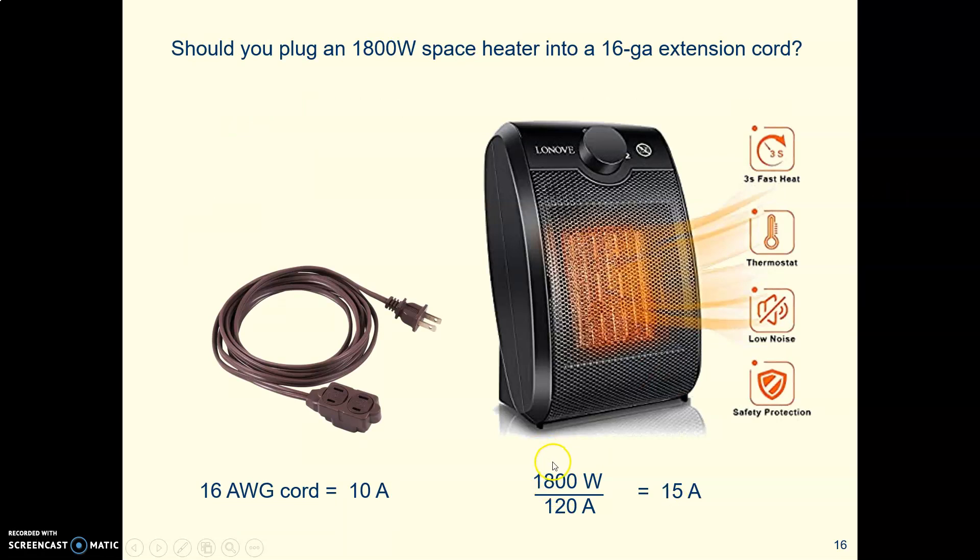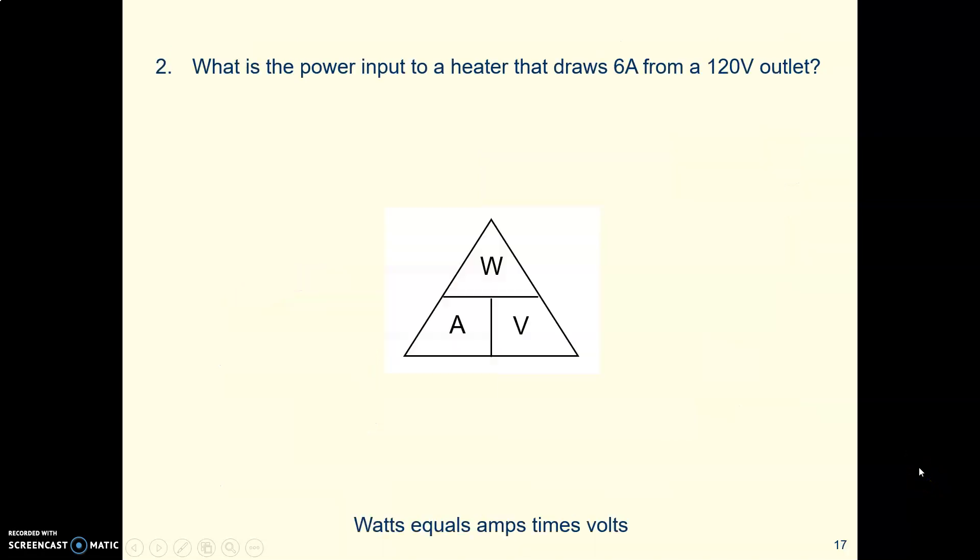1800 watts, you plug it into a 120 volt outlet. You come out with an answer of 15 amps. Is that okay? No, it's not okay, because your extension cord is only rated at 10 amps. So what will happen if you plug it in? Your extension cord will get hot, and if you leave it plugged in, you could even have a fire. Let's go on to the next question.